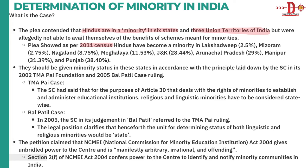The census data shows Hindus have become a minority in Lakshadweep (2.5%), Mizoram (2.75%), Nagaland (8.75%), Meghalaya (11.53%), Jammu and Kashmir (28%), Arunachal Pradesh (29%), Manipur (31%), and Punjab (38%). So there are six states and three UTs where Hindus are in minority.